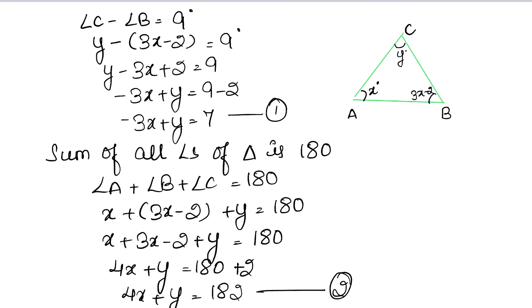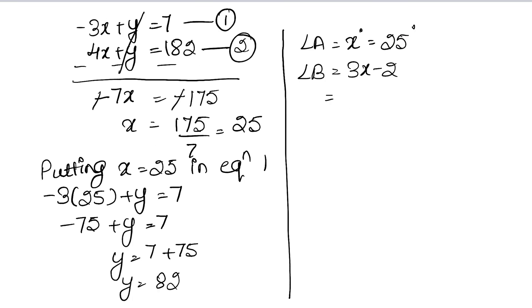So we have 3 into x, so 3 into 25, this is 75 minus 2. And we can say that 73 degrees is angle B.